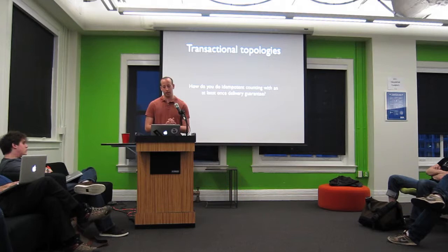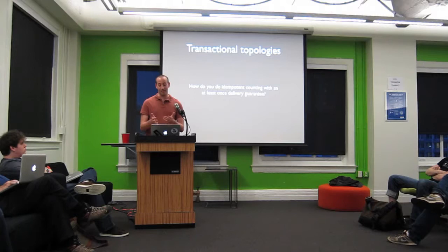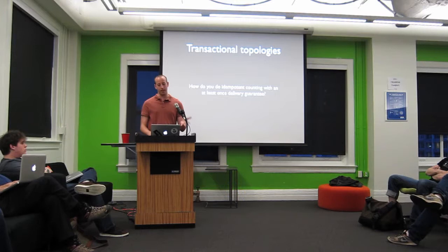The next thing I want to talk about is something relatively new in Storm called transactional topologies. The most common question I used to get is: you have this at-least-once delivery guarantee — how do you do something like counting idempotently, given an at-least-once guarantee? The answer to this in Storm is called transactional topologies.